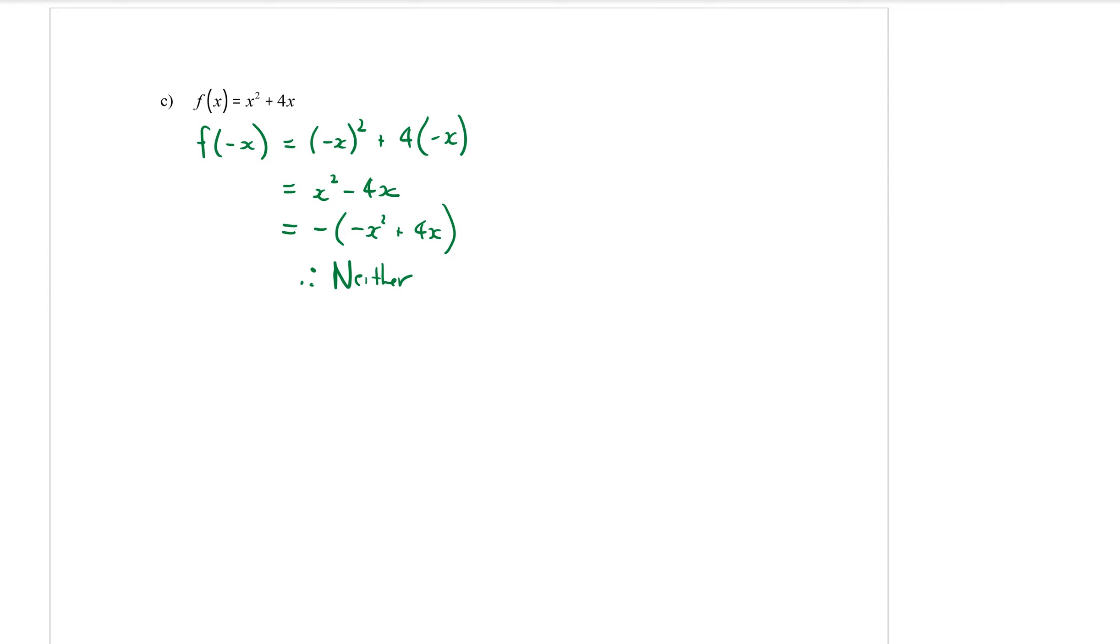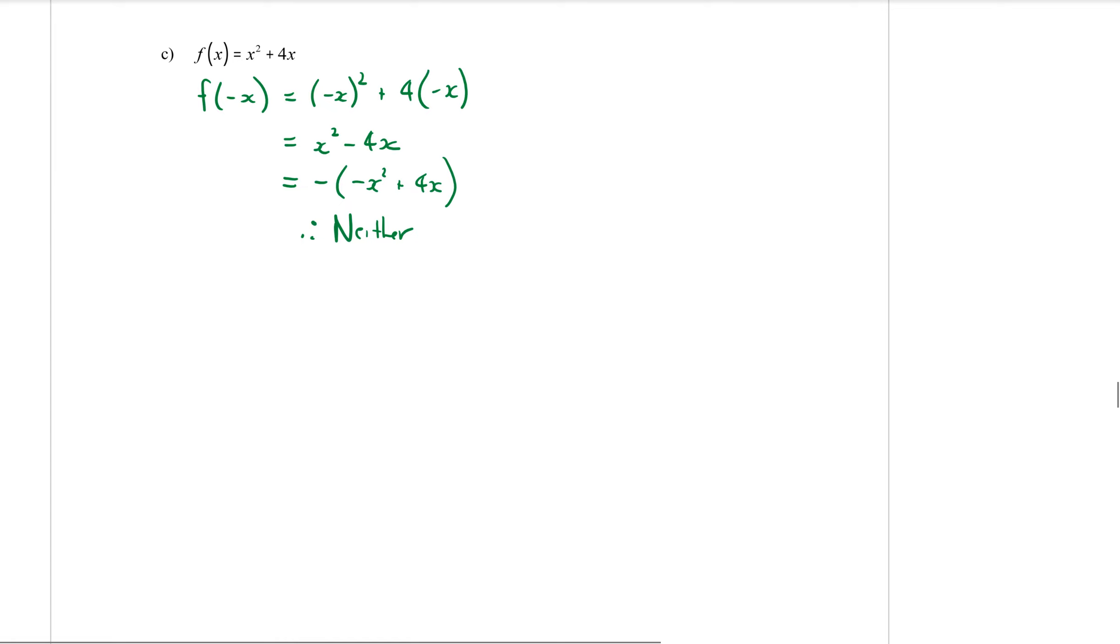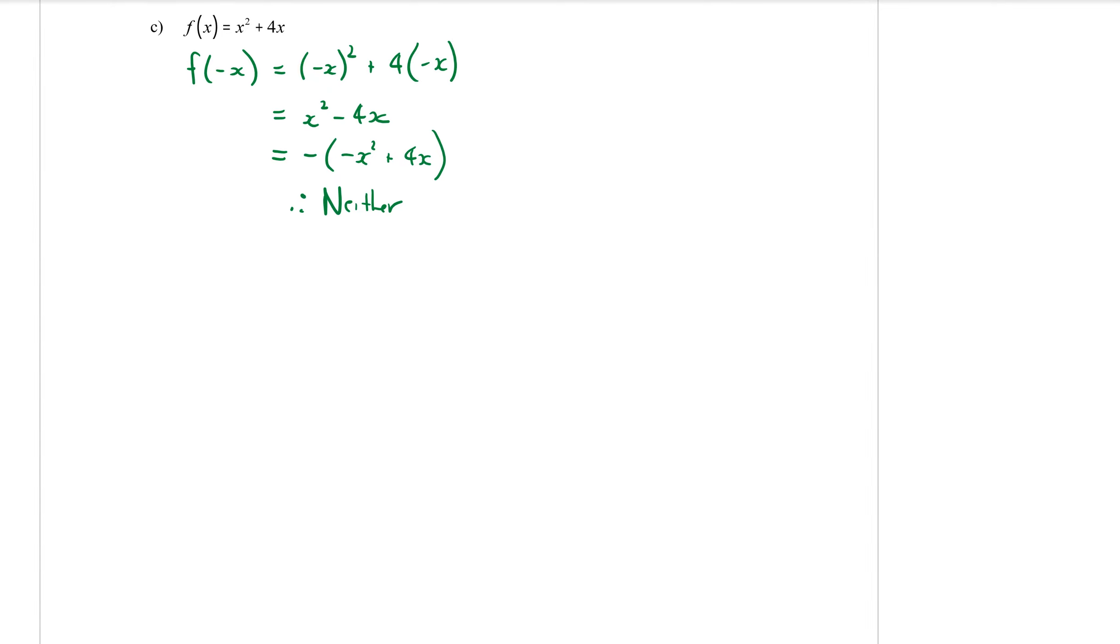That means it is not symmetrical over the y-axis and it does not have 180 degree rotational symmetry around the origin. But we can still draw it. So let's take our original function in the original form and factorize out an x. So that would be x bracket x plus 4. That means that I would have zeros or intercepts at x equals 0 and x equals minus 4.